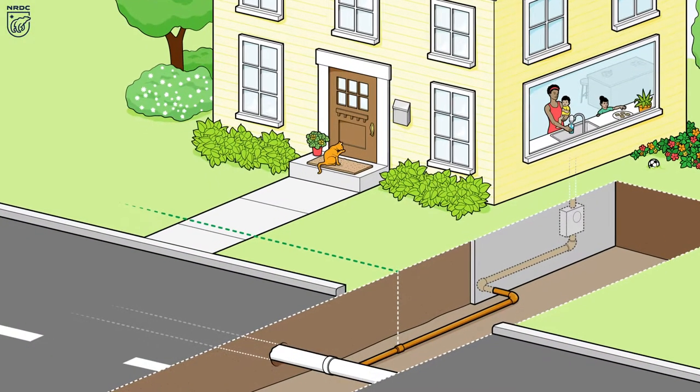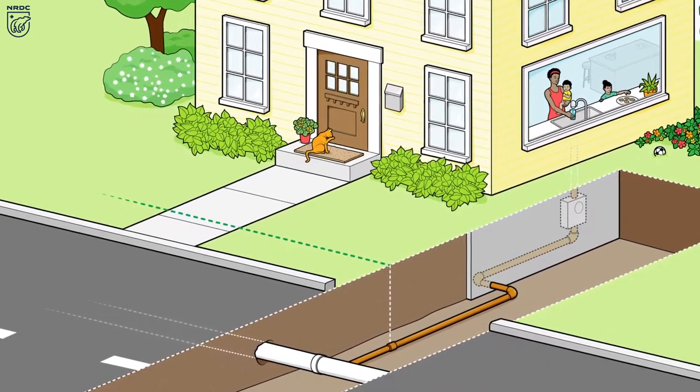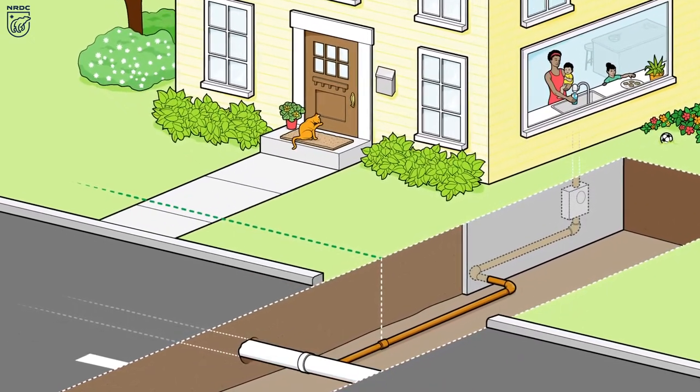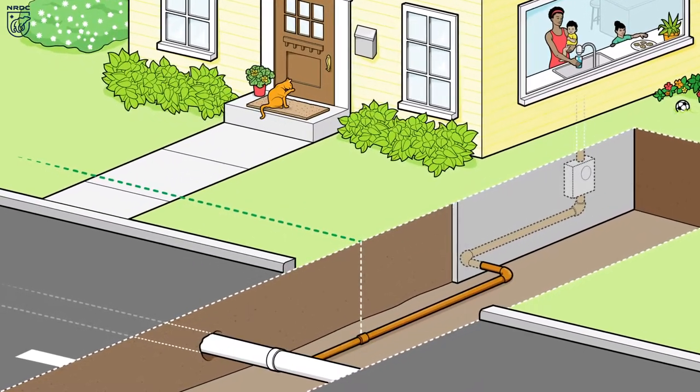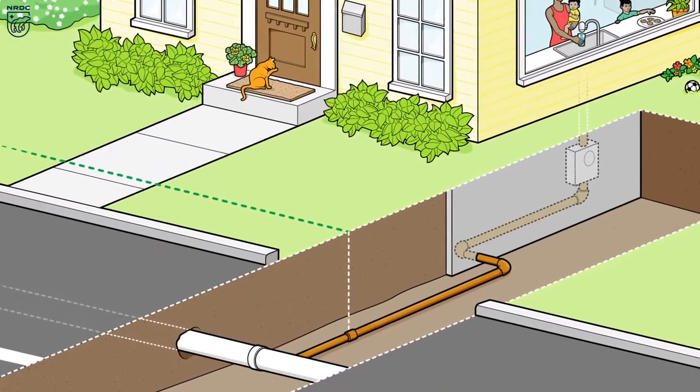A lot of people don't think about how water gets into their house, but lead service lines are the pipes that connect your home to the water main that runs below the street in front of your house. These service lines deliver drinking water to your tap.